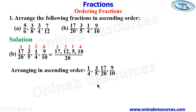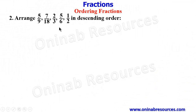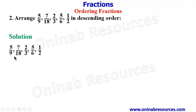We have arranged the second set of fractions in ascending order, so we're done with problem 1. For problem 2, arrange 5/9, 7/18, 2/3, 5/6, and 1/2 in descending order — from the largest fraction to the smallest. We find the LCM of the denominators 9, 18, 3, 6, and 2, which is 18.